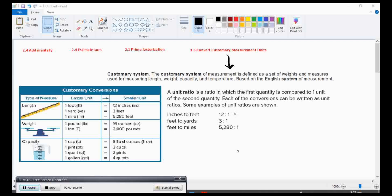From inches to feet, feet to yards, feet to miles. Inches to feet, we have 12 to 1. Feet to yards, we have 3 to 1. Feet to miles, we have 5,280 to 1. You have to remember that in customary conversions, we do have larger unit and smaller unit. One foot is equivalent to 12 inches. One yard is equivalent to 3 feet. One mile is equivalent to 5,280 feet.